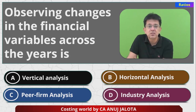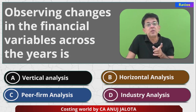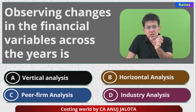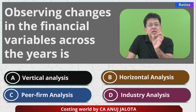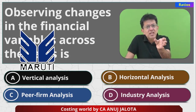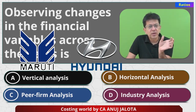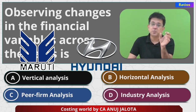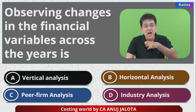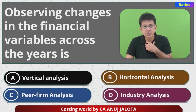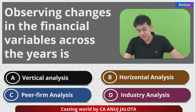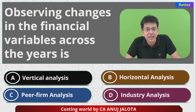What is peer firm analysis? We try to compare our ratios or information with other companies in the same industry — say Maruti and Hyundai — comparing their data. That is peer firm analysis. What is industry analysis? We compare our company's information with the industry in which we are operating. That is industry analysis.